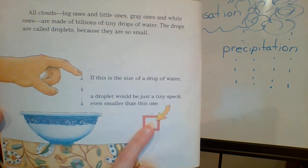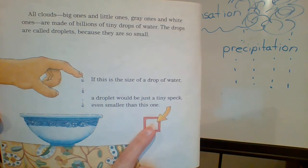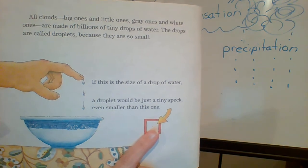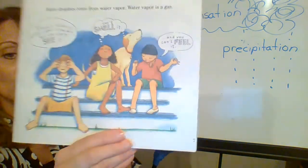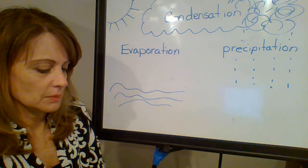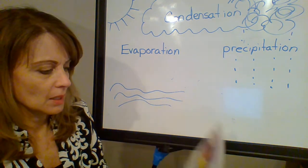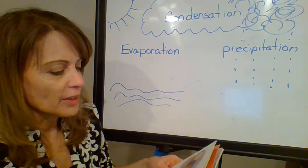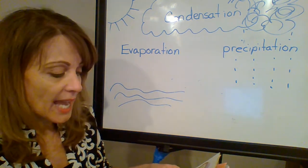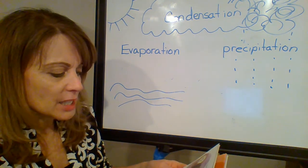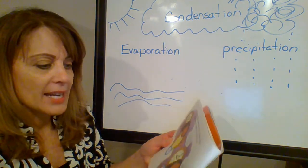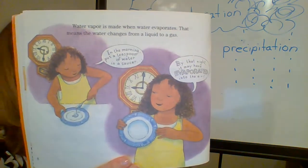Water droplets come from water vapor. Water vapor is a gas. There's always water vapor in the air, but you can't see it, can't smell it, and you can't feel it. Water vapor is made when water evaporates — that means the water changes from a liquid to a gas. In the morning, put a teaspoon of water in a saucer. By that night, it may have evaporated into the air.